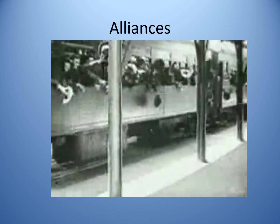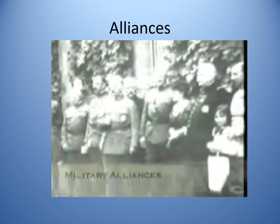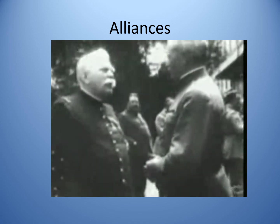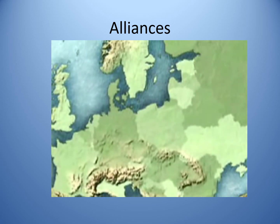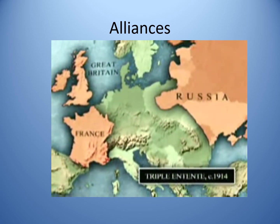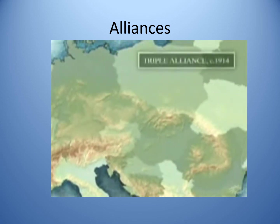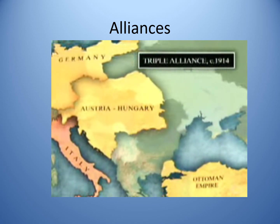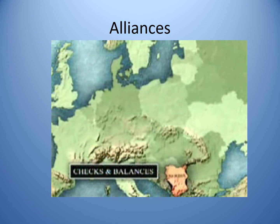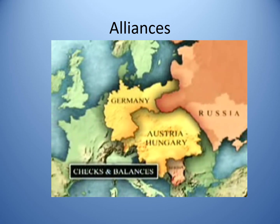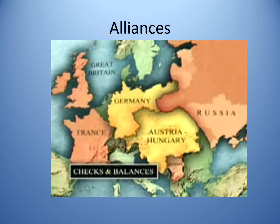As each country amassed weapons and beefed up their armies and navies, they saw the wisdom of agreeing to military alliances — mutual treaties of assistance committing each nation to support one another if attacked. By 1914, there were two major defense alliances. The Triple Entente, later called the Allies, consisted of France, Great Britain, and Russia. The Triple Alliance, later called the Central Powers, included Germany, Austria-Hungary, the Ottoman Empire, and Italy. These alliances served as a checks and balances system, but despite them, war soon erupted.